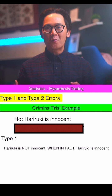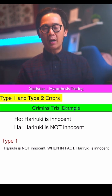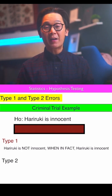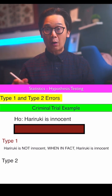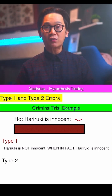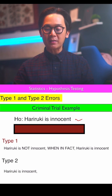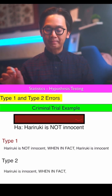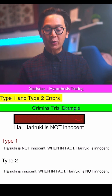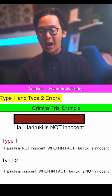What about the type 2 error? Writing it down is pretty much the same process, but this time we cover the alternative hypothesis. What you see for the type 2 error is the null hypothesis first. So we write 'Harry Ruki is innocent,' and then uncover the alternative hypothesis: 'when in fact Harry Ruki is not innocent.' That is our type 2 error statement.